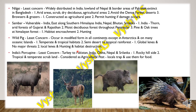Then we have the Indian Porcupine, which has least concern status. It is found from Turkey to Pakistan and also in India, China, Nepal and Sri Lanka. They are mainly found on rocky hillsides and tropical and temperate scrublands. They are considered agricultural pests similar to the Nilgai, and mainly face threats from local traps set by people and use for food.